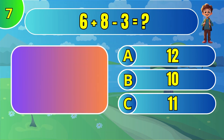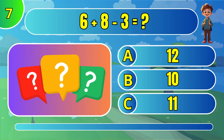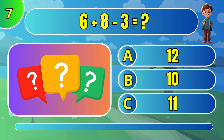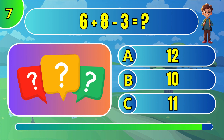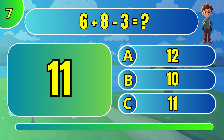What is 6 plus 8 minus 3? The answer is C: 11.